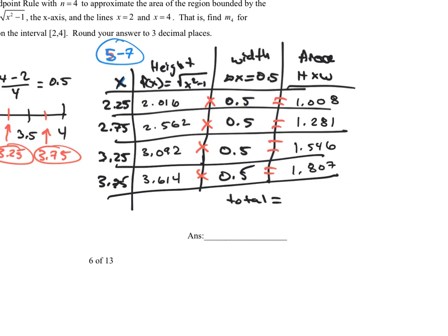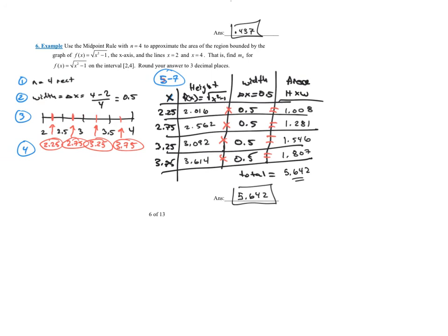Those are the areas of each individual rectangle. Adding them together: 1.008 plus 1.281 plus 1.546 plus 1.807 gives a total of 5.642. So 5.642 is the estimated area using the midpoint rule with four rectangles for the square root of x squared minus 1 on the interval 2 to 4.